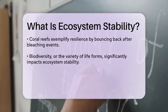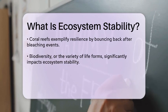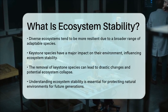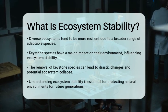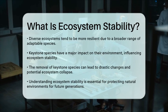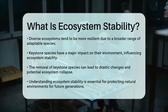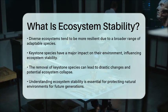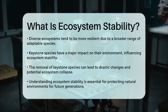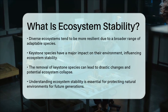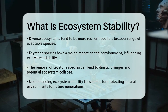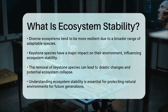Keystone species, which are species that have a disproportionately large impact on their environment relative to their abundance, also contribute to ecosystem stability. Their presence helps maintain the structure of the ecosystem, and their removal can lead to significant changes and potential collapse.